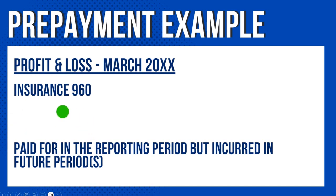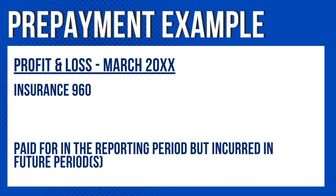If insurance were paid monthly — say £80 per month on a direct debit — a prepayment wouldn't be needed, because that £80 would show on the P&L every month. As things stand, we have the whole cost in a single month, which is very unfair. So a prepayment is something paid in the reporting period but incurred in future periods — and this applies to monthly, quarterly, or yearly profit and loss statements.